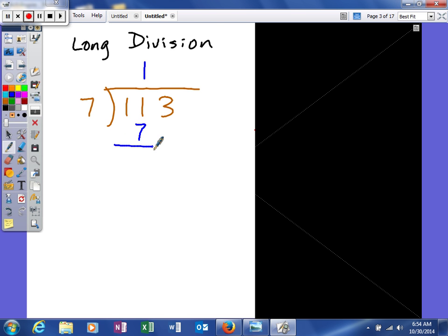After we do that, we're going to subtract. And then when you subtract those, you get a 4. And then next, we're going to bring down the 3. And again, we'll figure out how many times will 7 go into 43. So we'll say 6 times. And multiply those two together, and you get 42. And then again, we'll subtract.